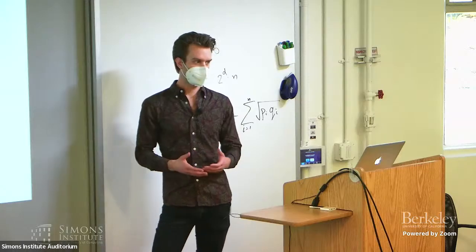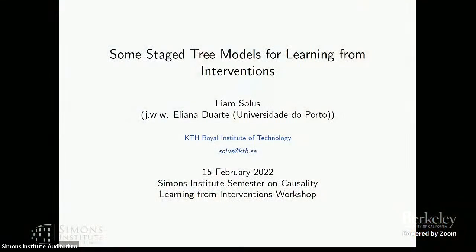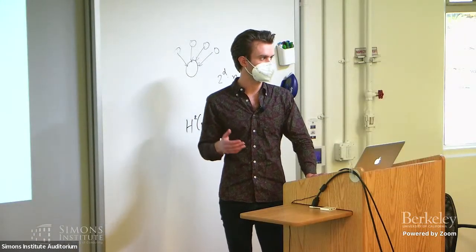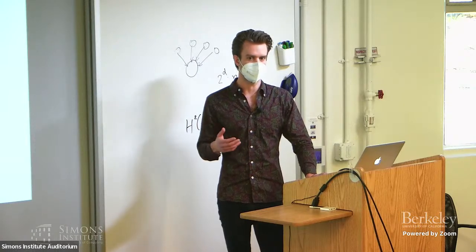To answer those particular more theoretical questions, it turned out to be helpful to pass to a more refined representation of the DAG model, something known as its stage tree representation. When exploring things from that perspective, we started to wonder how these models, which turn out to be much more diverse than our classic DAG models, can be used to give us more refined but tractable types of interventional models where we can still prove the theorems that we like, but gain some diversity in what we're modeling.